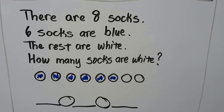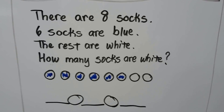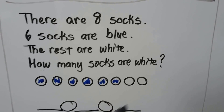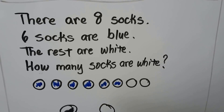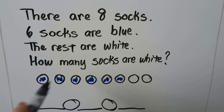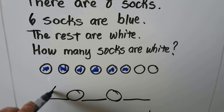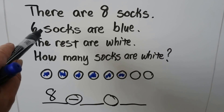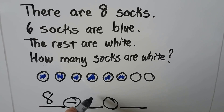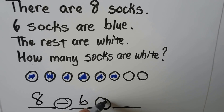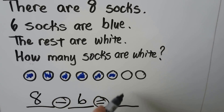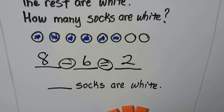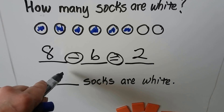So how many socks are white? We didn't color two of them, so that means two are white. We put how many in all — eight — minus the six socks that are blue, is equal to the two white ones. Two socks are white.